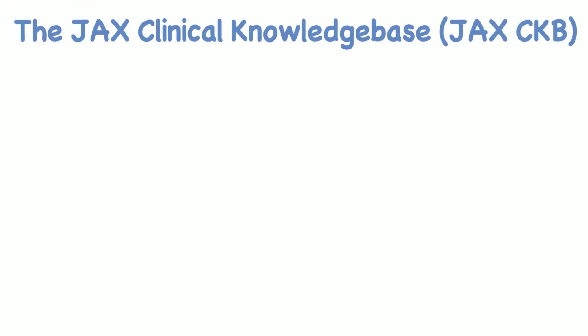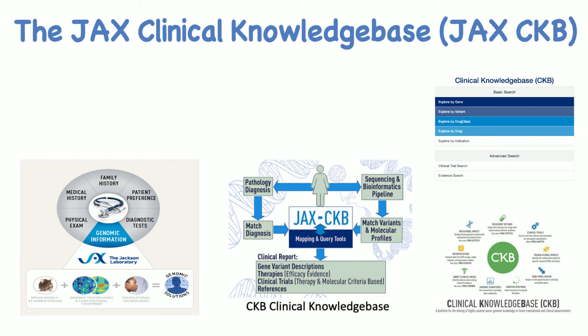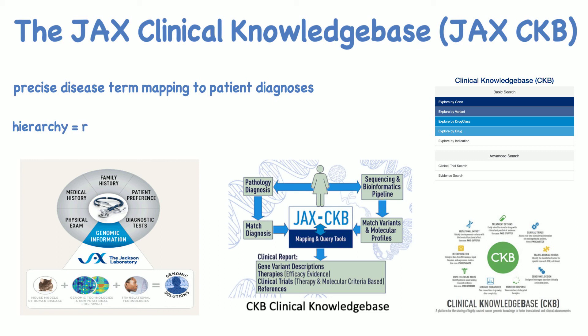The JAKS Clinical Knowledge Base integrates standardized cancer research data and clinical oncology-related patient data to aid in therapeutic decision-making. The Human Disease Ontology facilitates precise disease term mapping to patient diagnoses. The ontology's hierarchy of terms is leveraged to search and view data, and the hierarchical nature of the ontology allows for the return of the chosen disease term and its child terms when querying a cancer term.